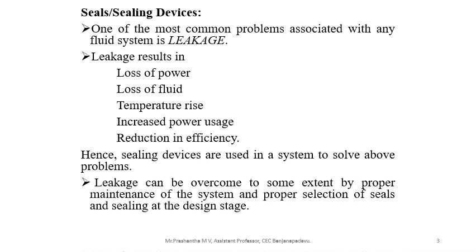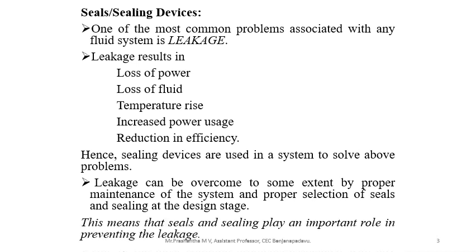Leakage can be overcome to some extent by proper maintenance of the system and proper selection of seals and sealing materials. During the design stage, leakage can be avoided to some extent by proper maintenance from time to time and proper selection of sealing materials at the beginning of the design stage. This means that seals and sealing play an important role in preventing leakage.